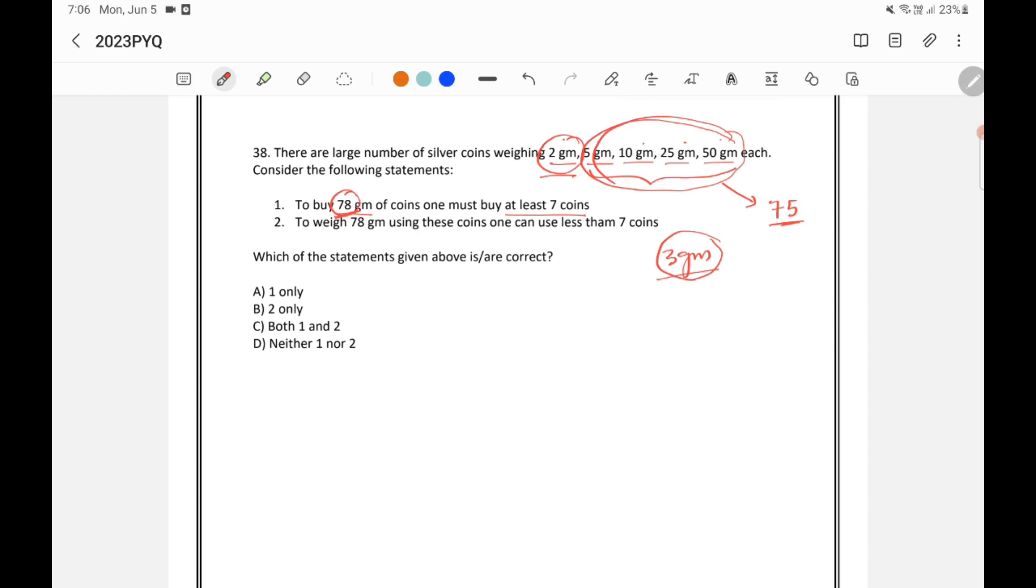So the possibility will be making 70 with these coins. 70 is also a multiple of 5, and making rest 8 with this coin. So 4 coins of 2 gram will be needed to make 8. So 4 coins are here.